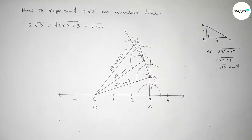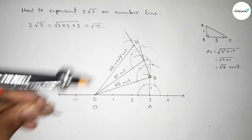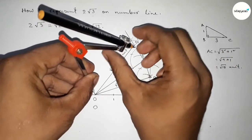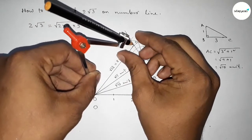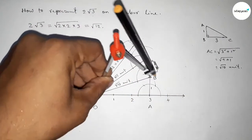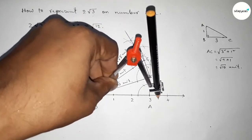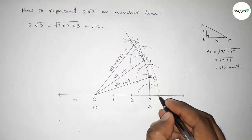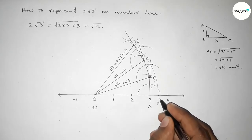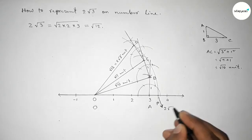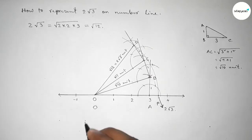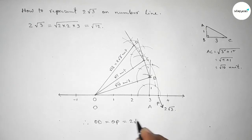Taking the length OD equal to √12 or 2√3 by using compass, and drawing an arc which meets the number line at point P, this is 2√3 on the number line. Therefore OD = OP = 2√3 units. That's all — thanks for watching. If this video is helpful to you, please share it with your friends.